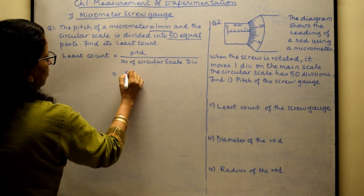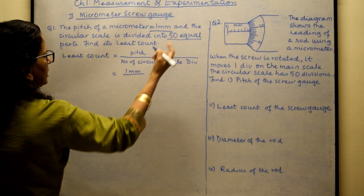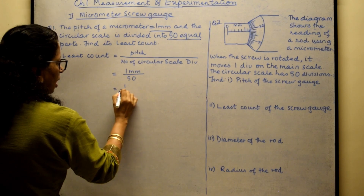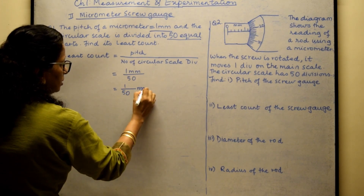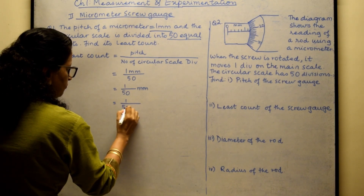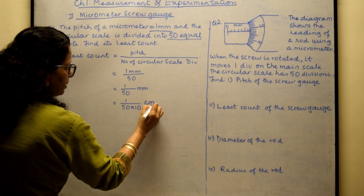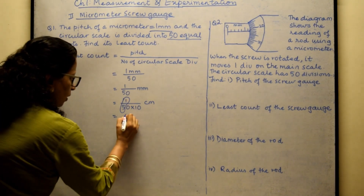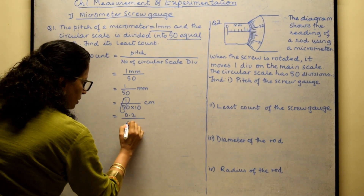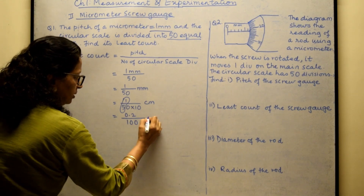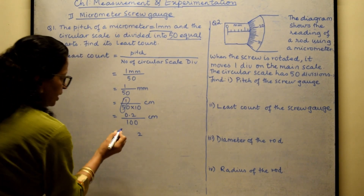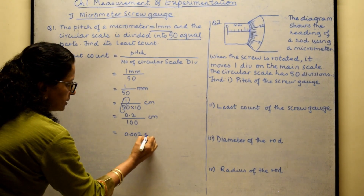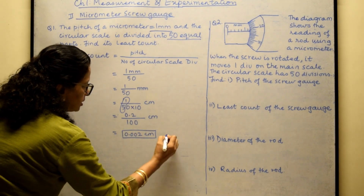The pitch is 1 millimeter and the number of circular scale divisions is 50, so it becomes 1/50 millimeter, which equals 1/50 into 1/10 centimeter (since 1 millimeter is one-tenth of a centimeter). That gives us 1/500 centimeter, and shifting the decimal by two places gives us 0.002 centimeter.